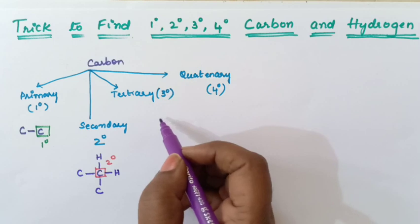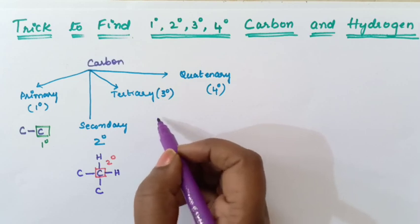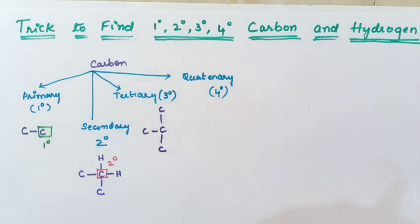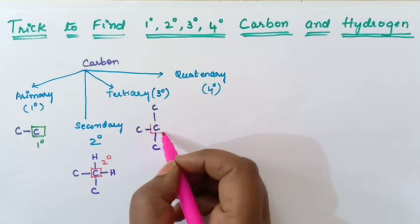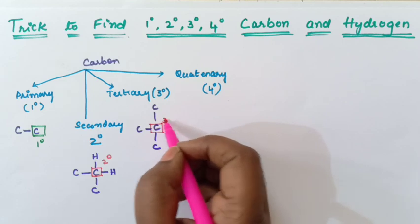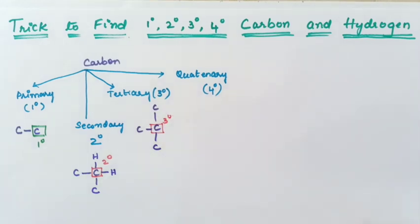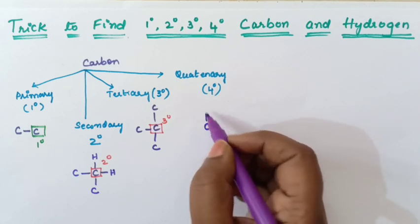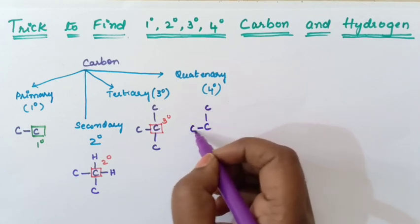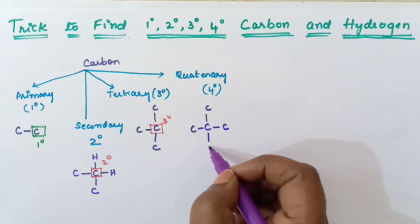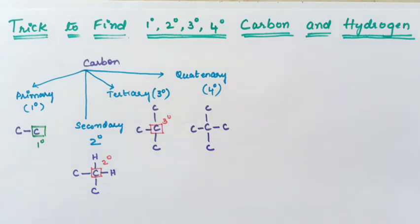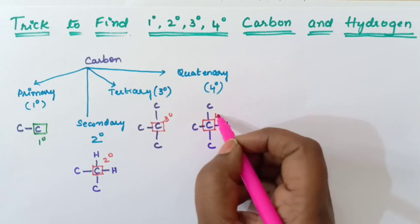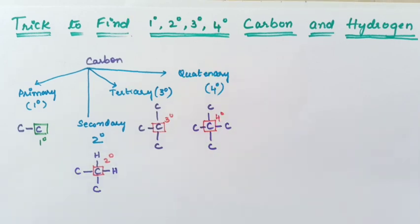Coming to tertiary carbon, if the carbon is connected to three carbon atoms — one, two, and three — then this carbon is called as tertiary carbon. Coming to quaternary carbon, if the carbon is connected to four carbon atoms — one, two, three, four — then we call it as quaternary carbon.